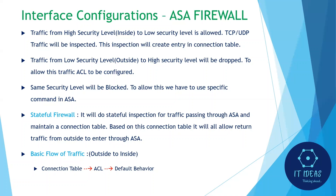Traffic flowing from a low security level — like outside or DMZ — to a high security level will be dropped by default. If we want to allow this traffic, we have to configure a security policy using ACLs. Also, if both networks are configured with the same security level, traffic between them will be blocked, and a specific command is needed to allow it.